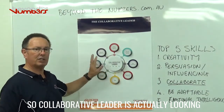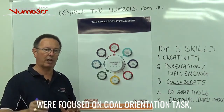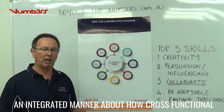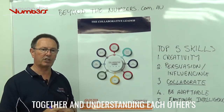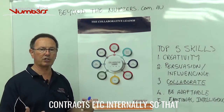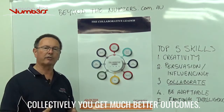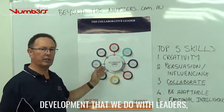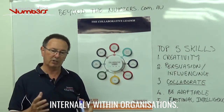So a collaborative leader is actually looking at a big picture, compared to traditional leaders who are focused on goal orientation or task. This is a leader looking in quite an integrated manner at how cross-functional groups get better results by working together, understanding each other's needs, setting up the right internal service-type contracts so people are clear on where accountability lines are — and collectively you get much better outcomes. We use this in the context of leader development to help them think about the bigger world in which they interact within organisations.